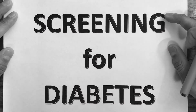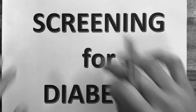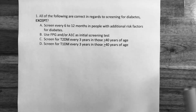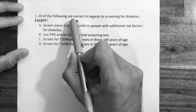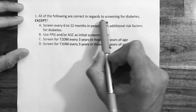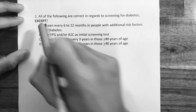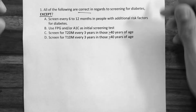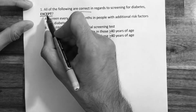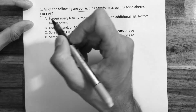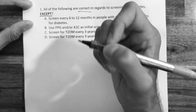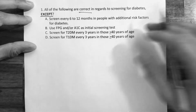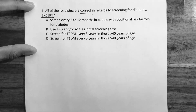In this video we'll go through screening for diabetes. Question number one — all of the following are correct in regards to screening for diabetes, except. Be familiar with the words being used in the question. Here it's 'except.' Sometimes the word used will be 'which of the following is false' or 'which of the following is not correct.' So just be vigilant on the word being used in the sentence.